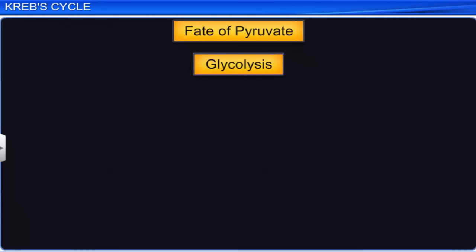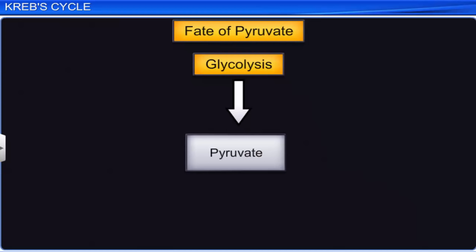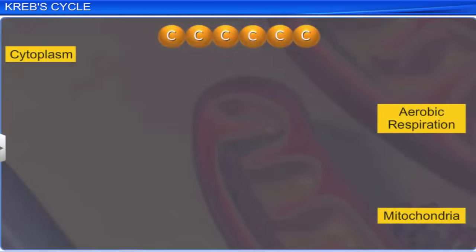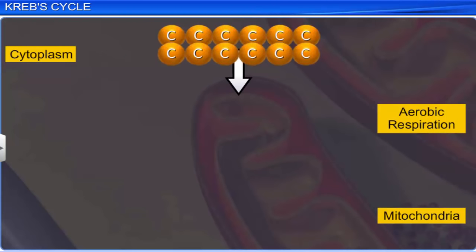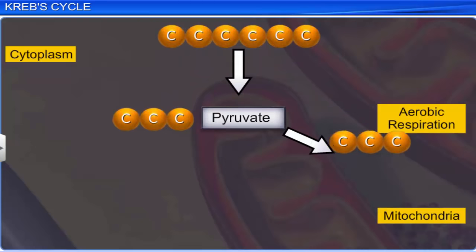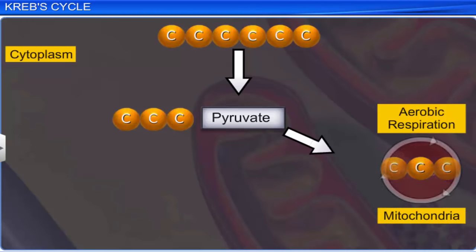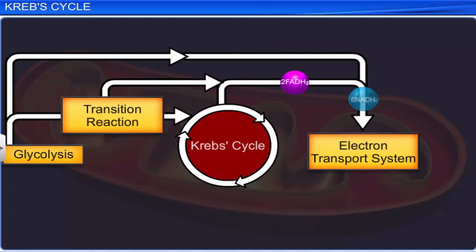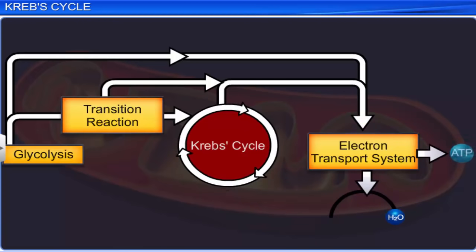Glycolysis results in pyruvate. Based on the availability of oxygen, pyruvate either undergoes anaerobic or aerobic respiration. Aerobic respiration involves the transport of pyruvate from cytoplasm into the mitochondria for complete oxidation in Krebs cycle. It also involves the transfer of hydrogen ions and electrons from the coenzymes NADH+ and FADH2 to oxygen in the electron transport system or ETS for ATP synthesis.